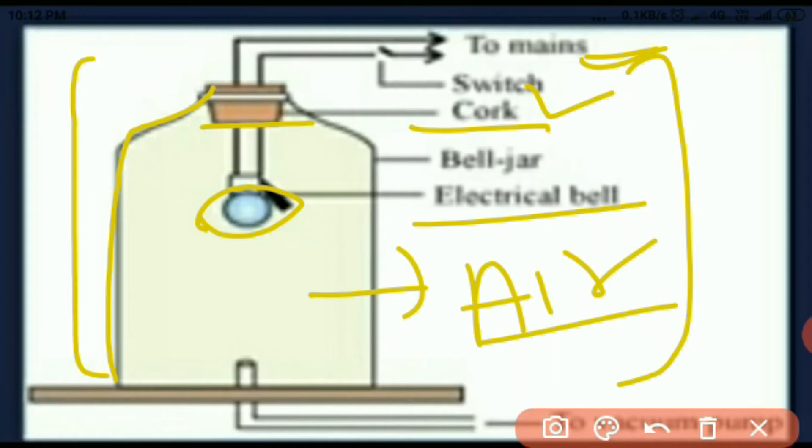This is the electric bell. When current flows, ringing sound is produced. We can sit at a distance and hear the sound from the jar. This is the ringing sound.